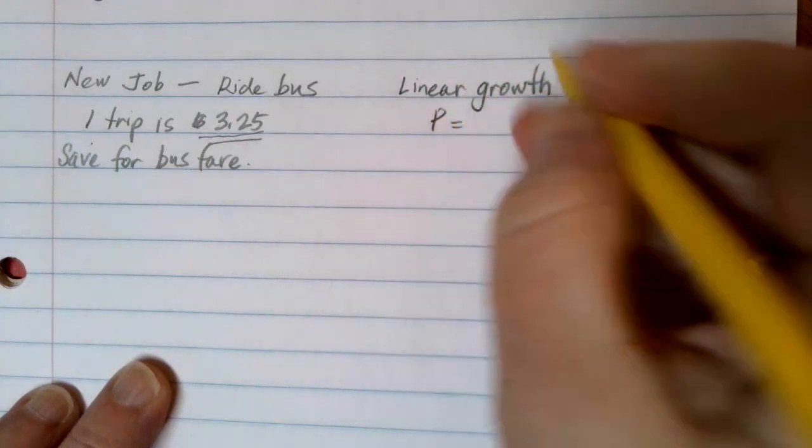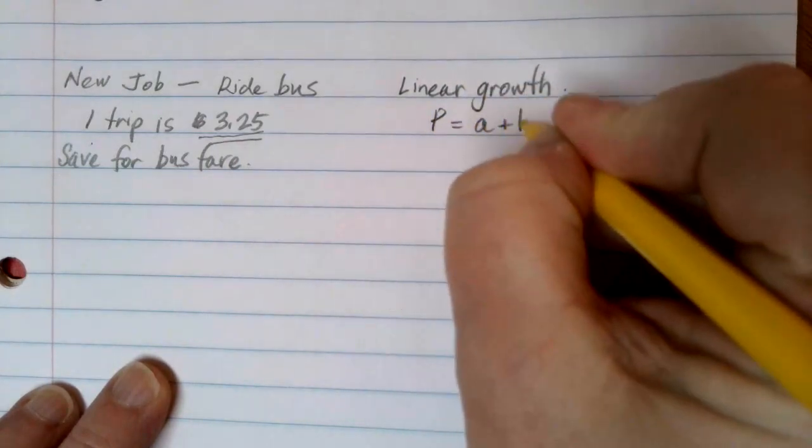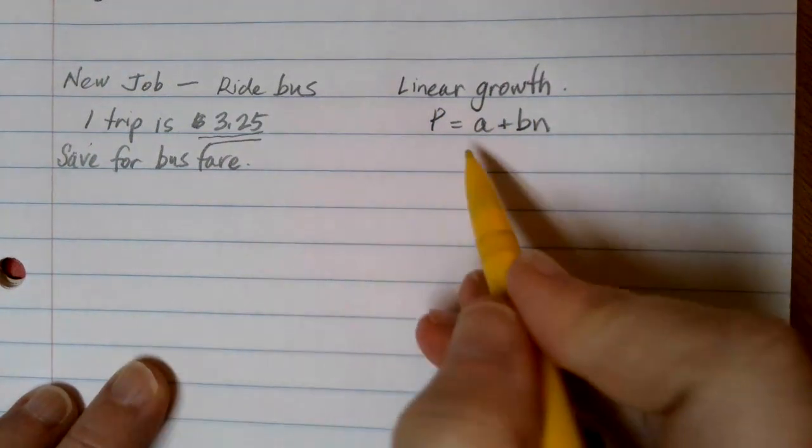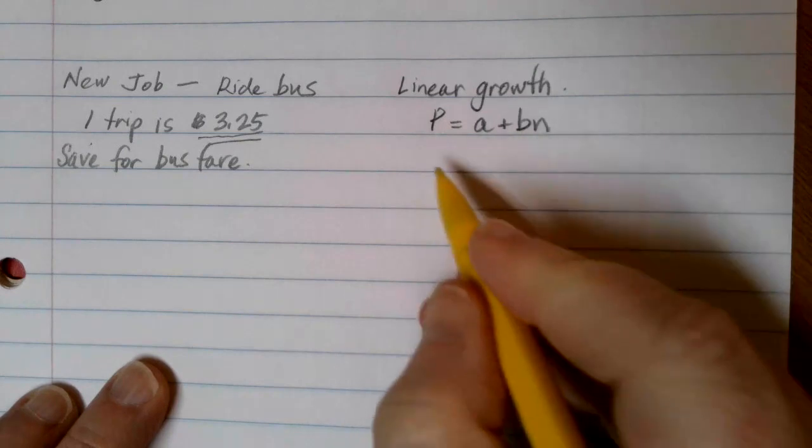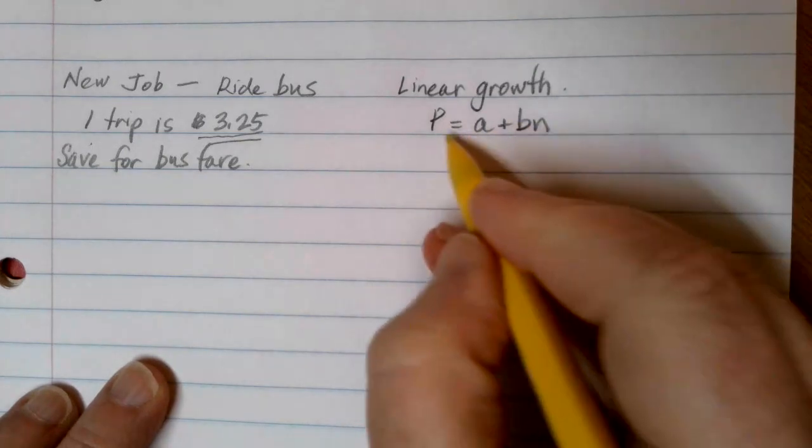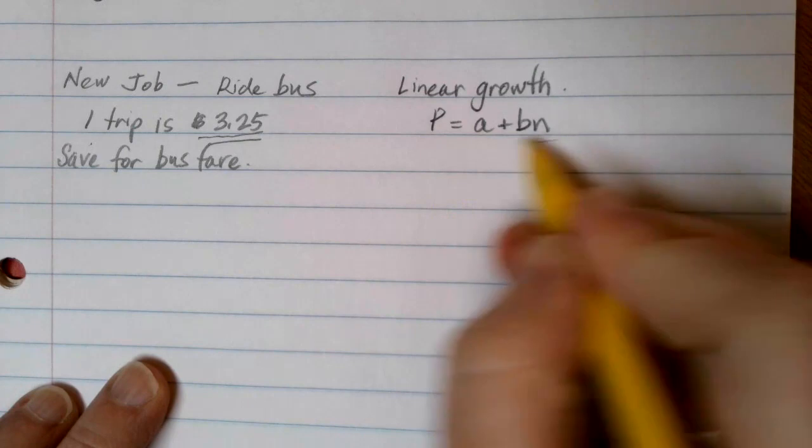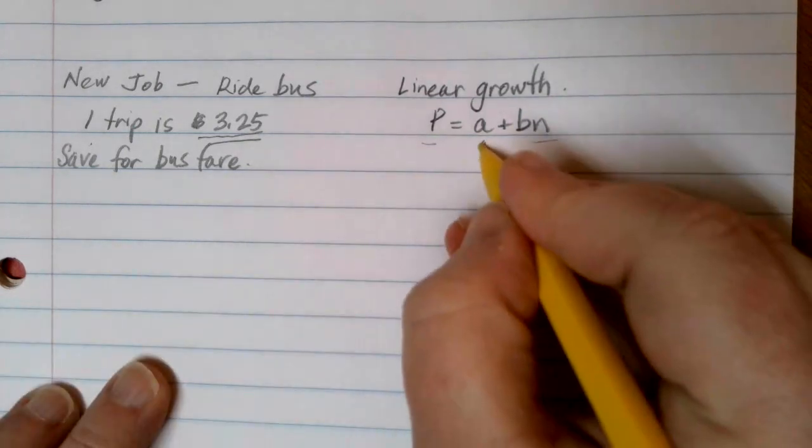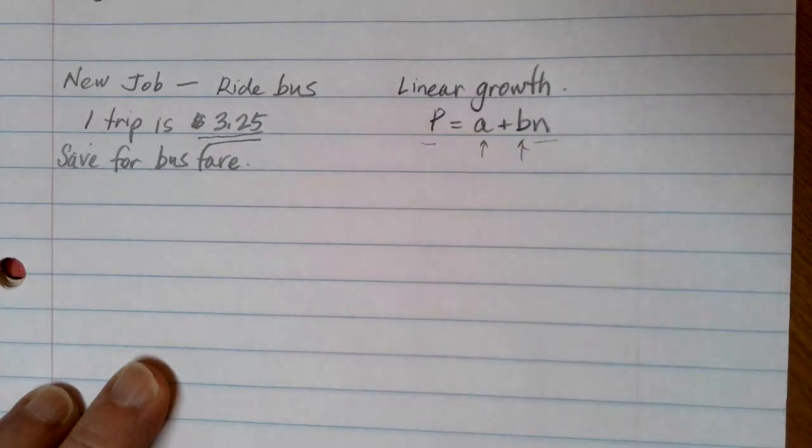And that means I can use my general linear equation, P equals A plus B times N. So let's create our equation model. Our variables are going to be P and N. Every linear growth equation keeps those variables. And I have to identify the A value and the B value for my given situation.